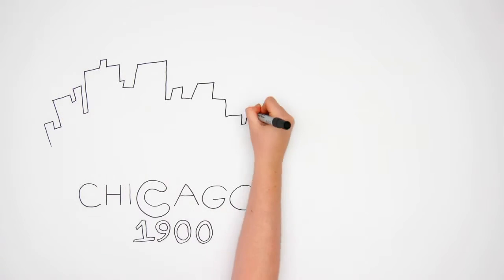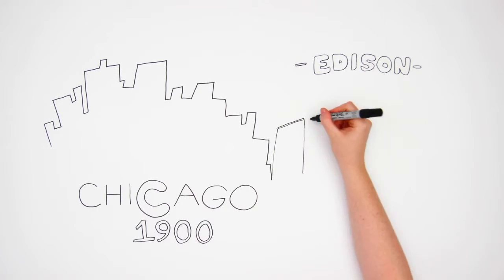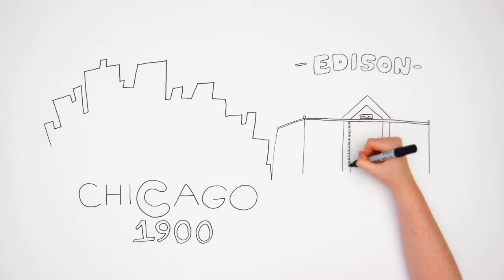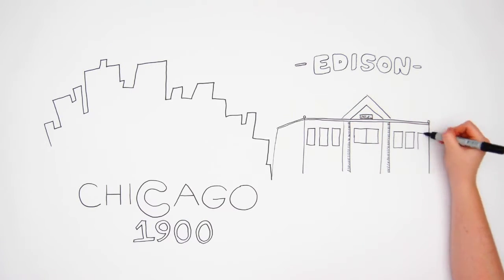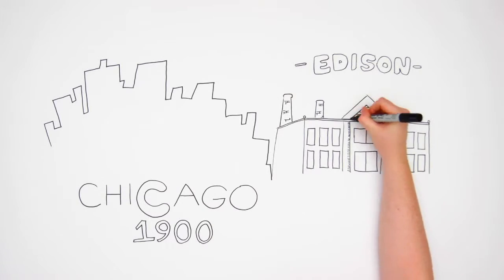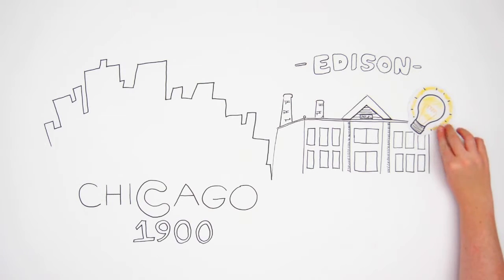Chicago 1900. The Edison Power Company developed the turbine power station, which could generate and distribute large-scale power to business. This provided cheaper power than any factory or business-based generator, without many of the headaches.